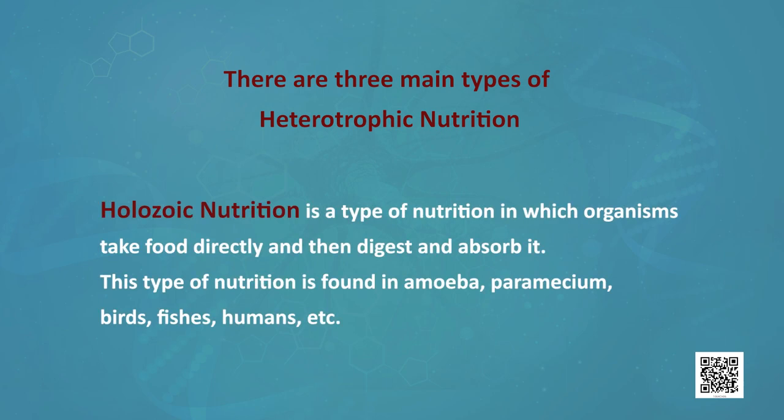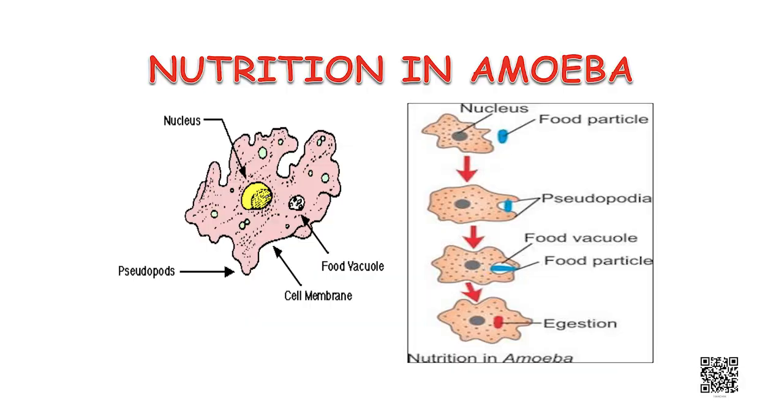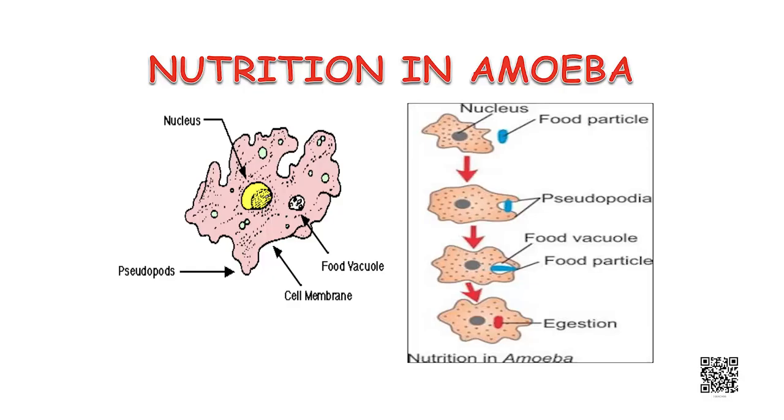Holozoic nutrition is a type of nutrition in which organisms take food directly and then digest and absorb it. This type of nutrition is found in amoeba, paramecium, birds, fishes, humans, etc. Since the food and the way it is absorbed differs, the digestive system is different in various organisms. In single-celled organisms, the food may be taken in by the entire cell surface. But as the complexity of the organism increases, different parts become specialised to perform different functions. This diagram shows the various steps involved in nutrition in amoeba.